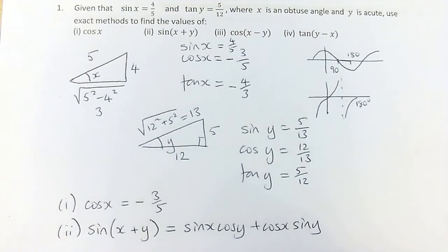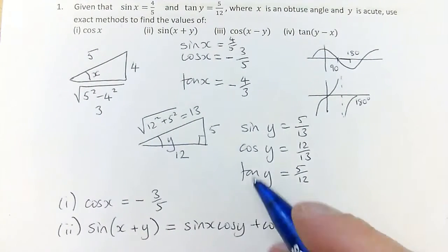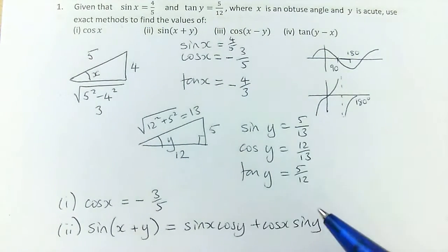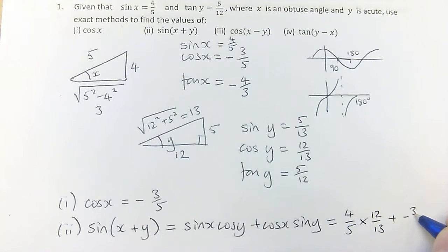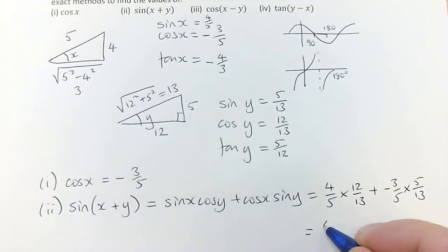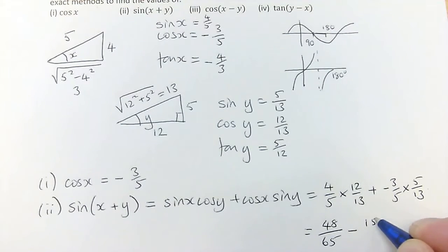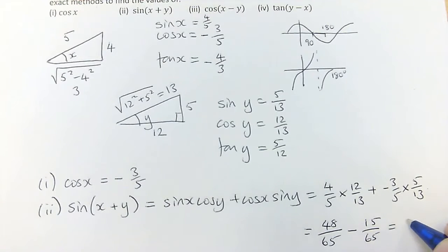So all I have to do is multiply together the things I've already got set up. So sin of x is 4 fifths times cos of y is 12 thirteenths. So it's 4 over 5 times 12 over 13 plus cos of x, which is minus 3 fifths, times sin of y, which is 5 thirteenths. And 5 thirteenths are 65, so this is 48 over 65 minus 15 over 65, which is 33 over 65.